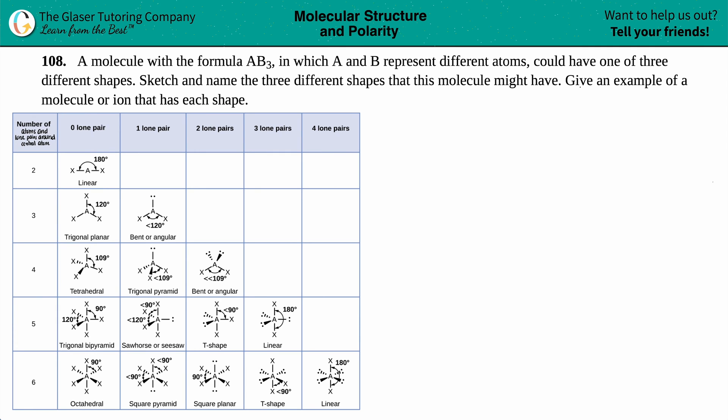Number 108, a molecule with the formula AB3, in which A and B represent different atoms, could have one of three different shapes. Sketch and name the three different shapes that this molecule might have, and then give an example of a molecule or ion that has each shape.